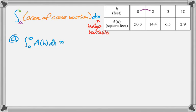So first, we're going to go from 0 to 2, which is 2. And then left Riemann sum. So we use the value of the function at 0, which is the left endpoint. So 50.3. And then plus, you have to go from 2 to 5, which is 3. And then the left endpoint gives us 14.4. And then we have to go from 5 to 10, which is 5. And the left endpoint is 6.5.